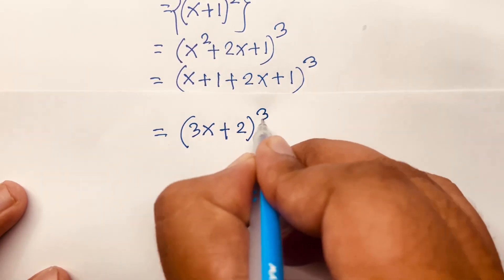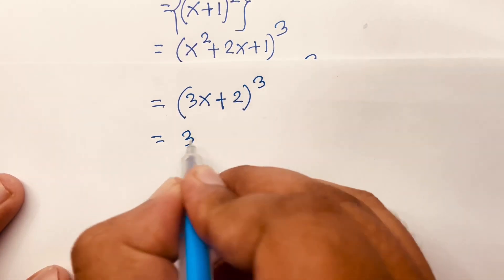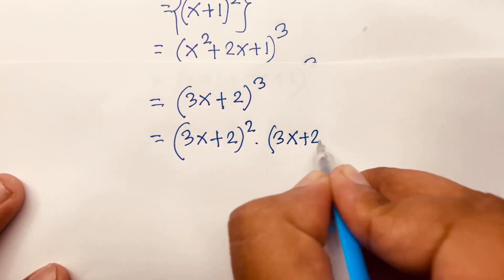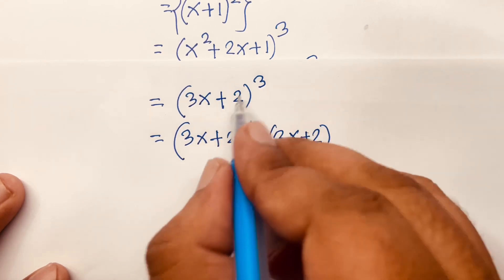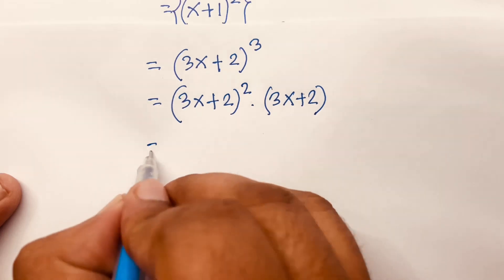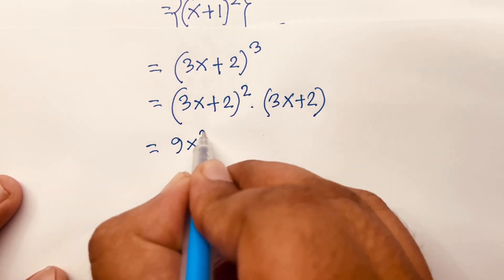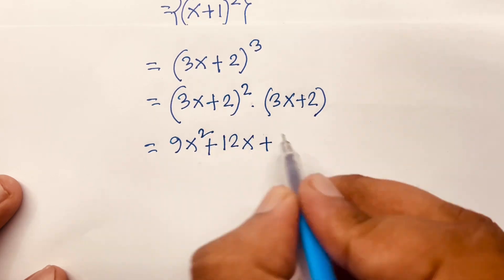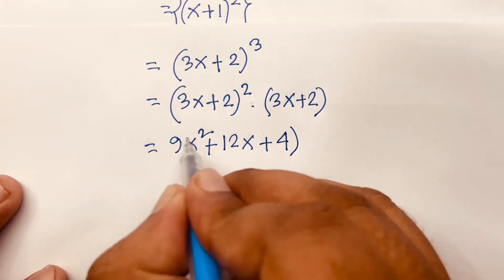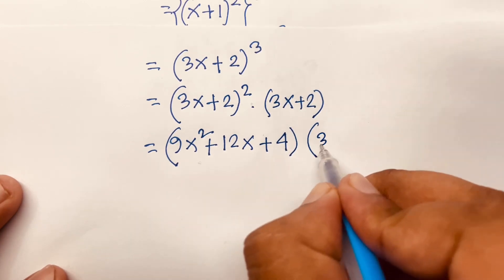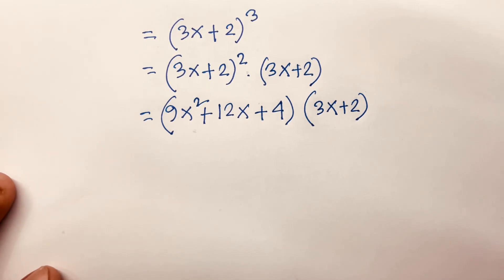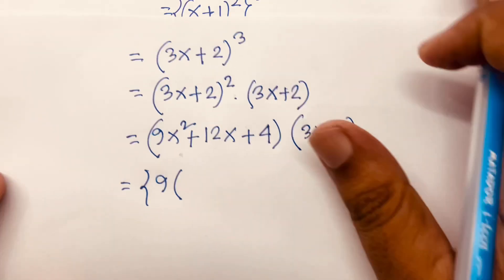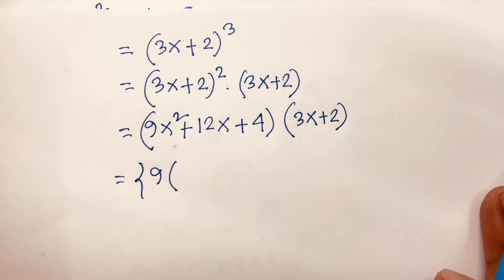Simplifying, x plus 2x is 3x, and 1 plus 1 is 2, giving (3x plus 2) to the power 3. I can write this as (3x plus 2)^2 times (3x plus 2). Using (a plus b) whole square, (3x plus 2)^2 equals 9x squared plus 12x plus 4. Substituting x squared equals x plus 1, 9x squared becomes 9(x plus 1).